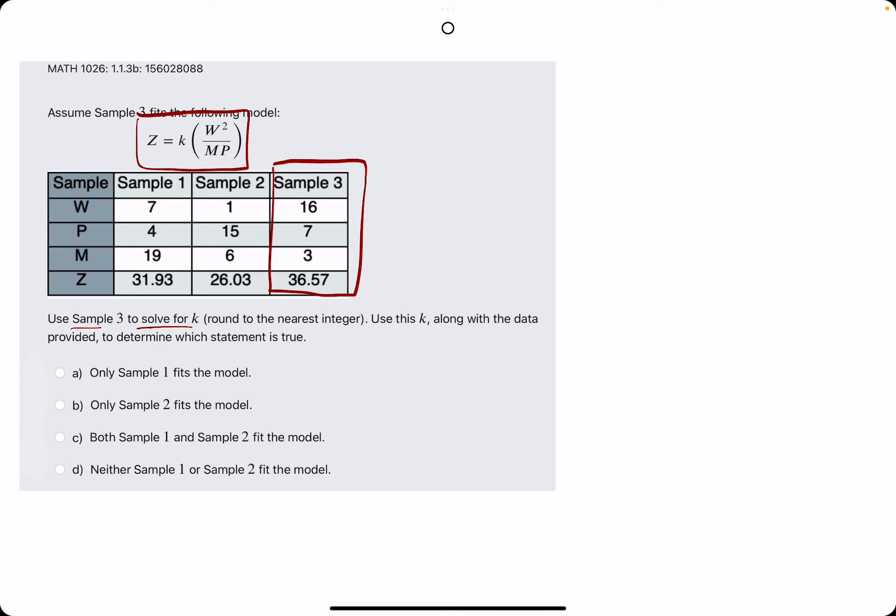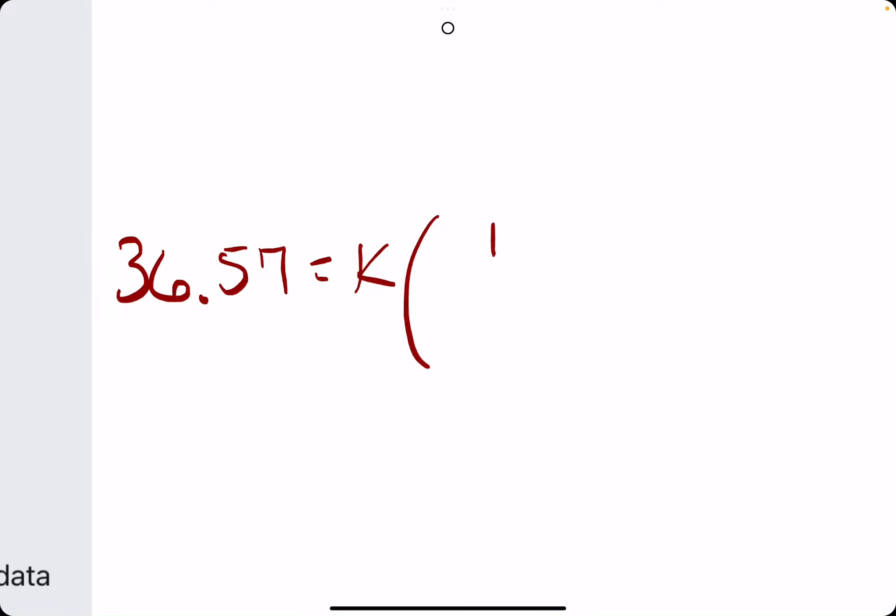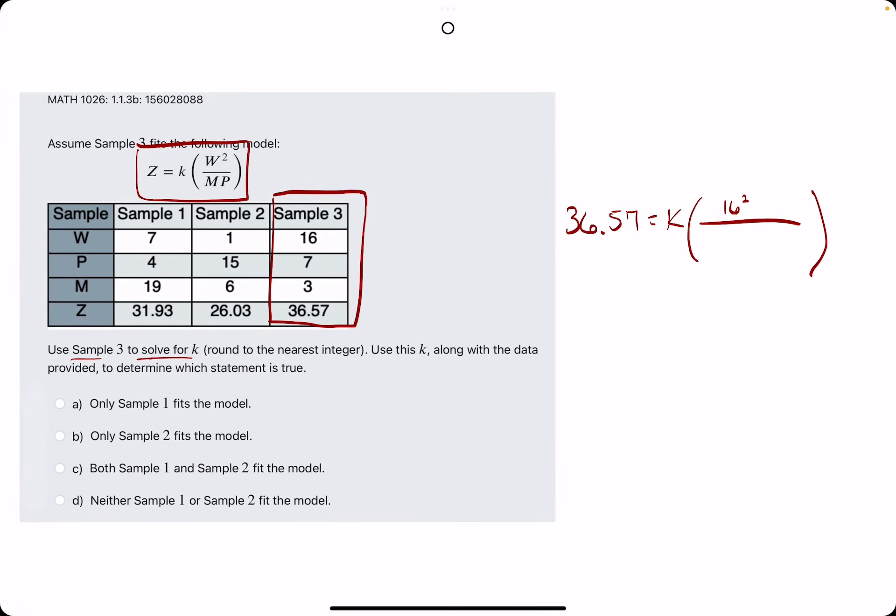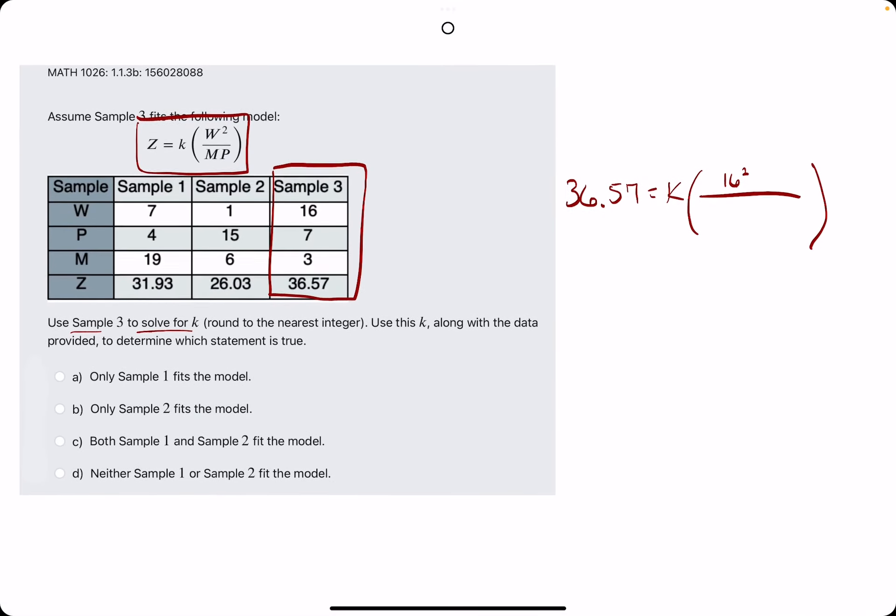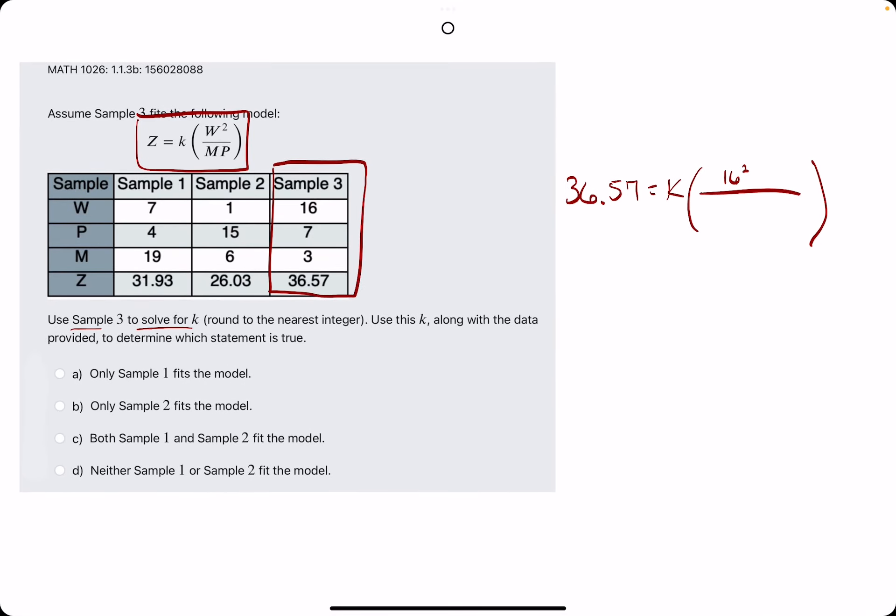So first step is solving for k. We're going to plug in everything we know into the equation. So z is equal to 36.57, k we do not know. W is 16, so the equation has W squared, so we will have 16 squared. M times P from Sample 3 will be 3 times 7, respectively.